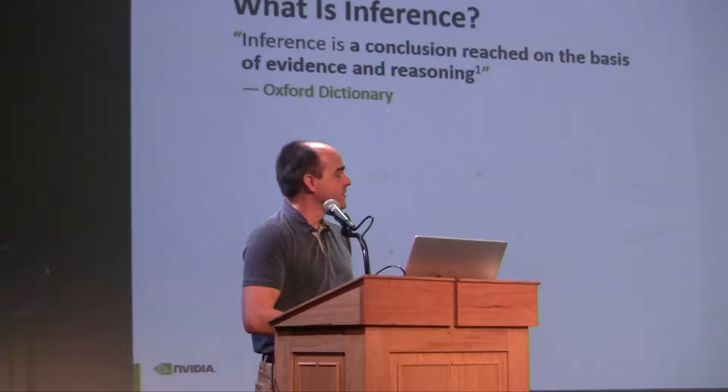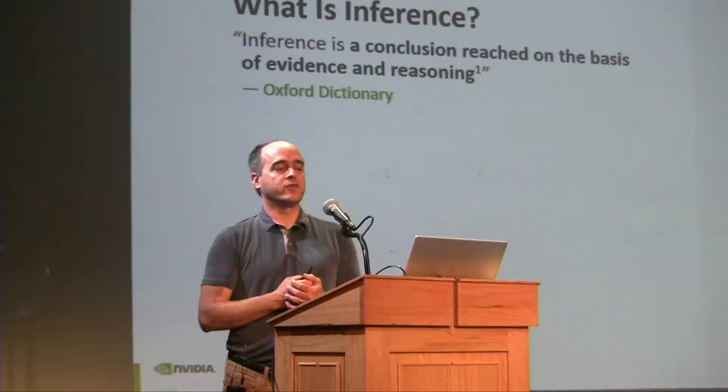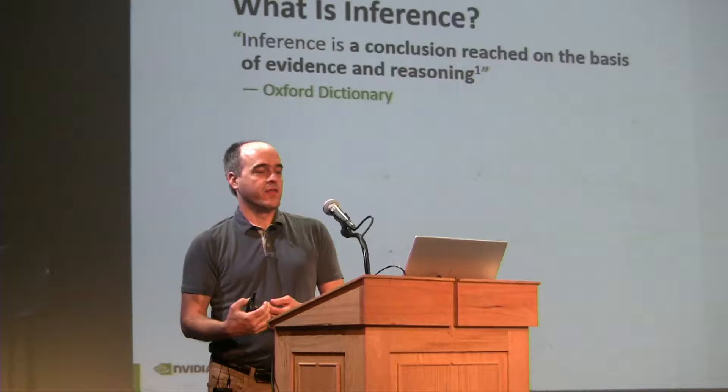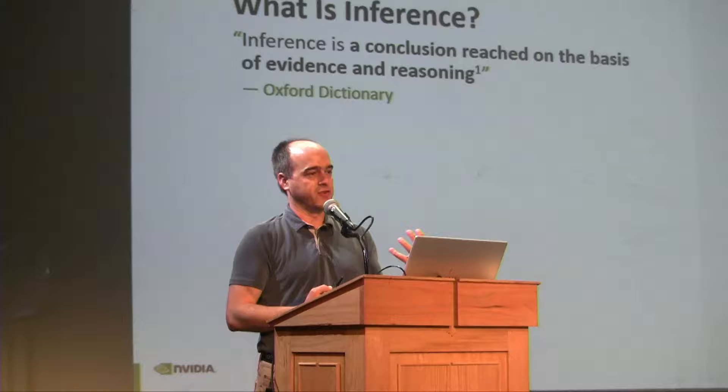What exactly is inference? According to the Oxford Dictionary, inference is the conclusion you reach on the basis of evidence and reasoning. In the context of neural networks, the conclusion is the output of your neural network. The evidence is what was trained — your prior knowledge — and the input activations, or your current knowledge. The reasoning is implicit in the neural network itself, based on the structure of the network.